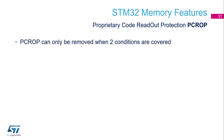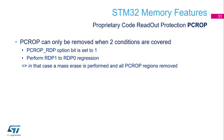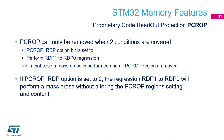To remove the PCROP, you need two conditions. First, an option byte named PCROP_RDP must be set. Then you must perform an RDP level 1 to RDP level 0 regression. In summary, this transition triggers a mass erase of all flash. If PCROP_RDP is set, the PCROP region will also be removed during this regression. If you do the RDP regression without setting PCROP_RDP, it will perform a mass erase without altering the PCROP region, so the content remains.